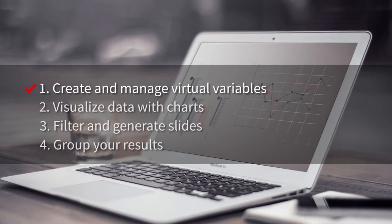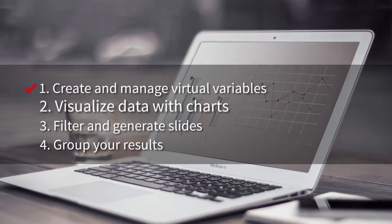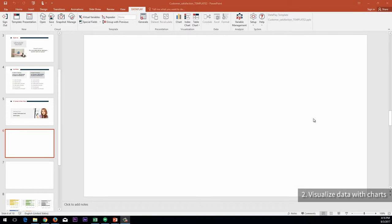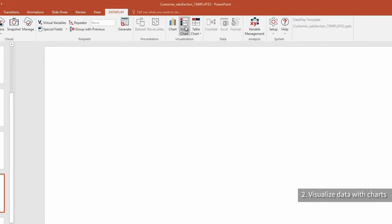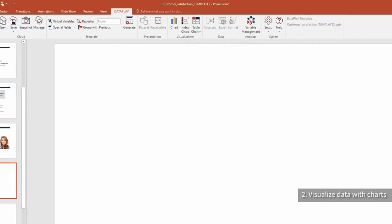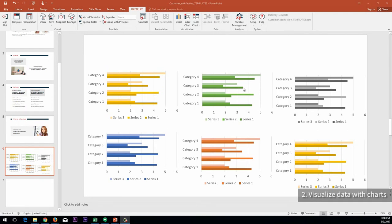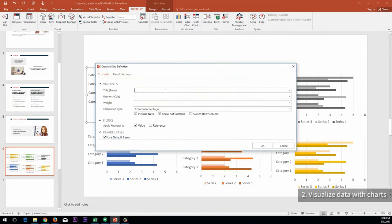Now let's see how to visualize data with charts. Once you are done with defining virtual variables, insert some charts with which you would like to visualize your findings. They are available in the PowerPoint add-in toolbar. Afterwards, you need to select the chart and click on the cross-tab button in order to start assigning virtual variables to charts.